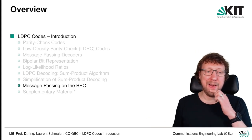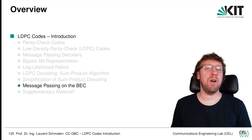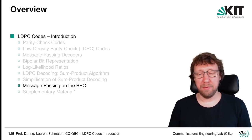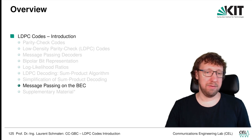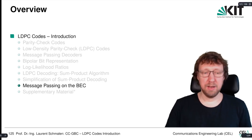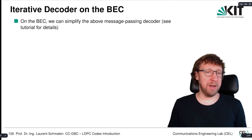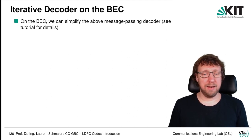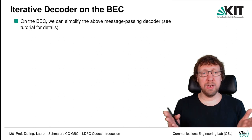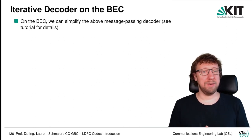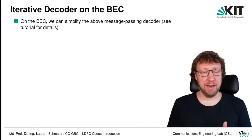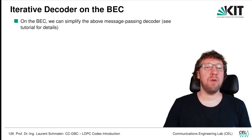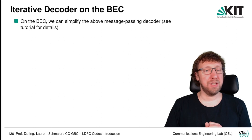We're going to simplify the sum-product decoder for the binary erasure channel, and we see that we can come up with a very simple decoding algorithm. On the binary erasure channel, we can simplify the message passing decoder. The full derivation is done in the tutorial, and we build on the fact that we only have three possible messages.